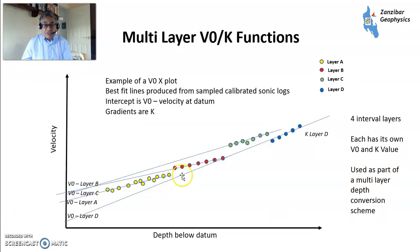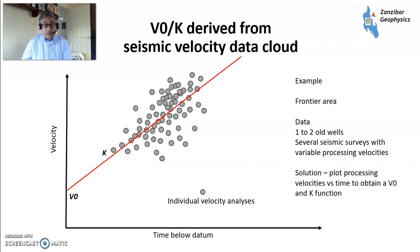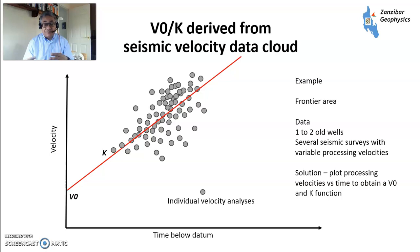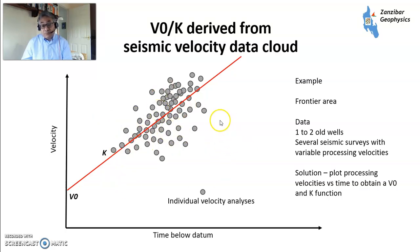You can also have different V0s for different layers. This example shows velocity versus depth below datum with layers A, B, C, and D, all with slightly different V0s and different Ks — this is how you handle a multilayer situation. You can also use V0K where you have multiple seismic velocities that are fuzzy because of different surveys processed by different people. Back out time-depth pairs from those velocity sets, cross-plot them in a spreadsheet, and from there you can get V0 and K to produce a smoother map that removes the variability from different processing runs.